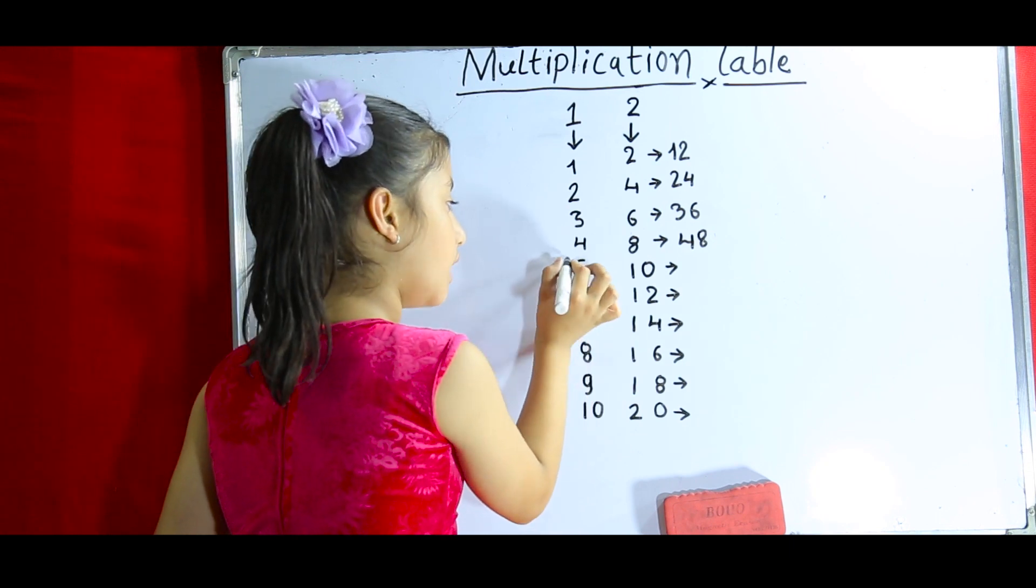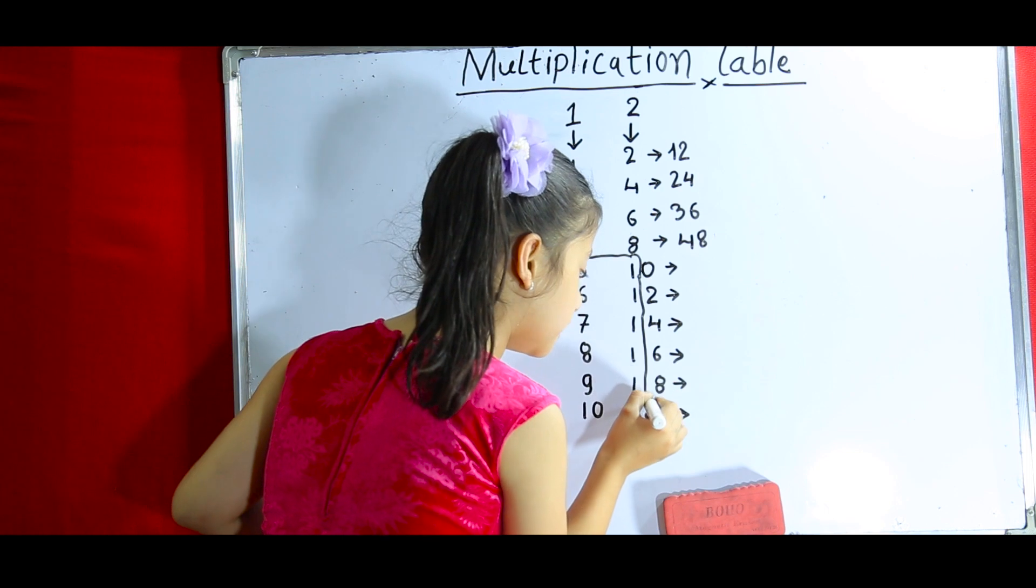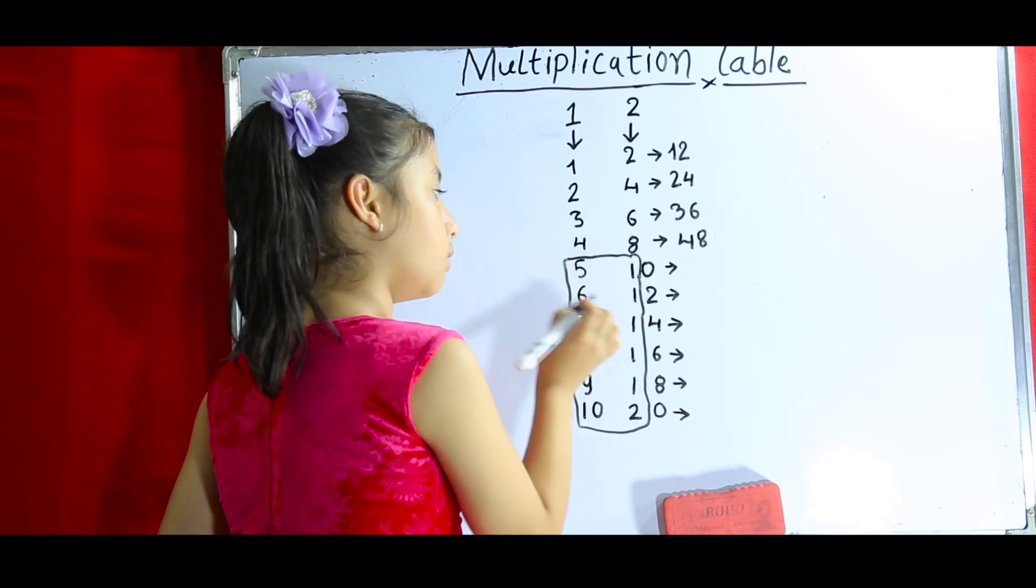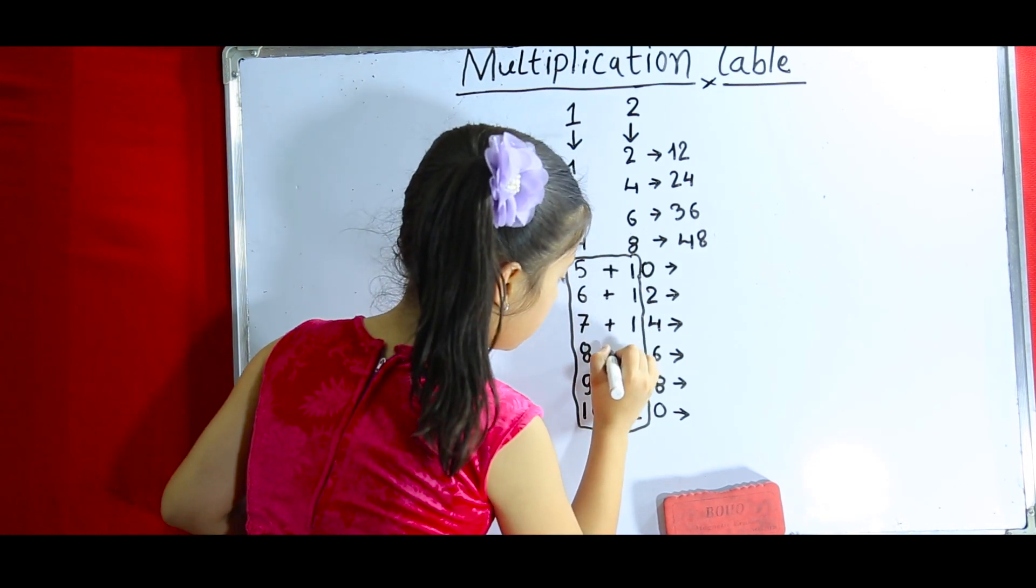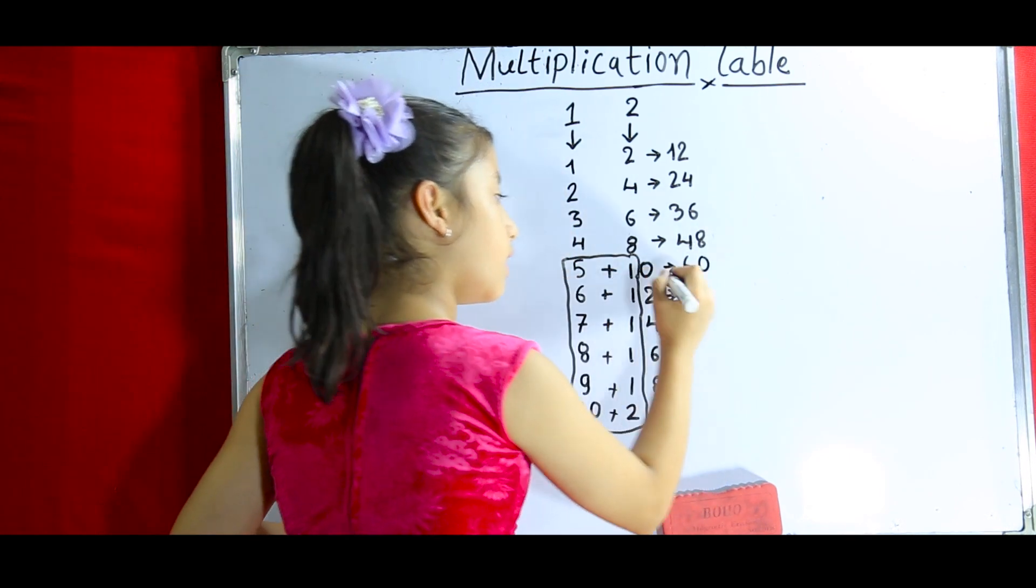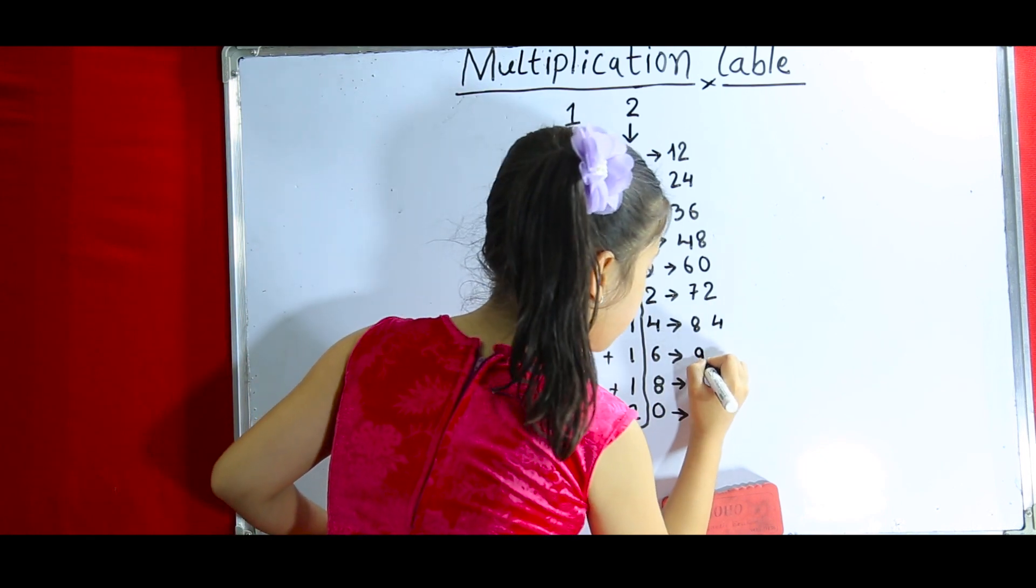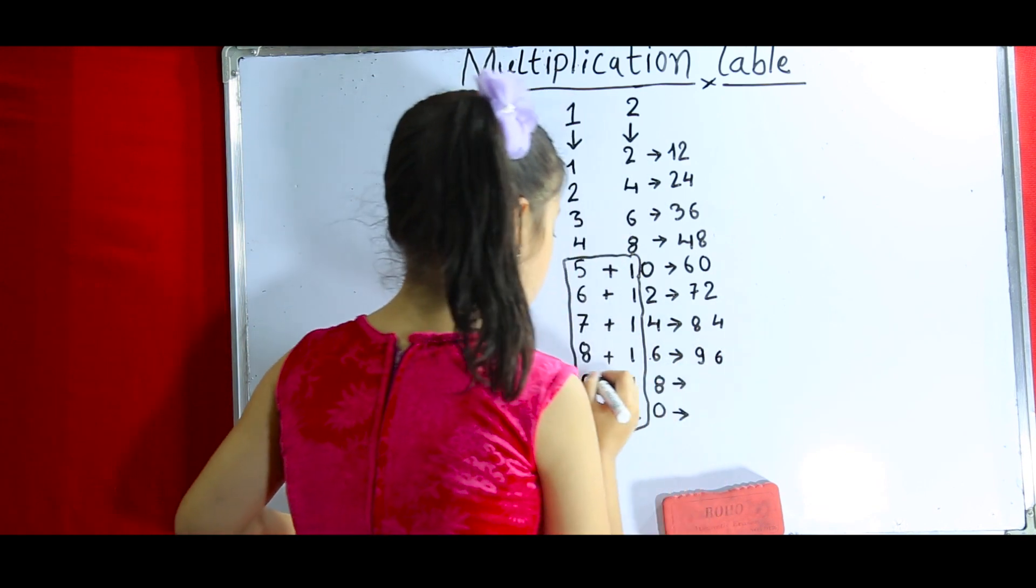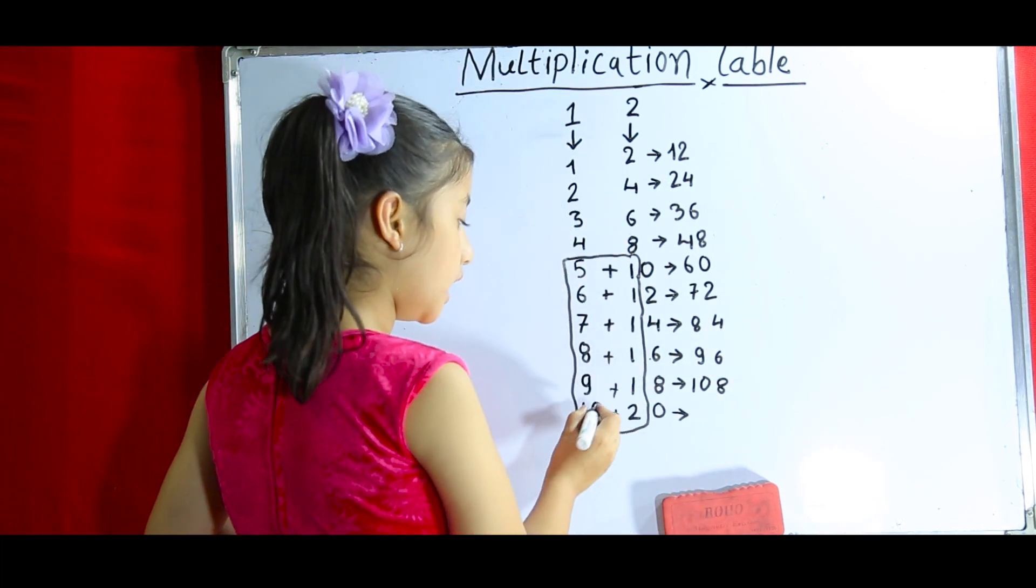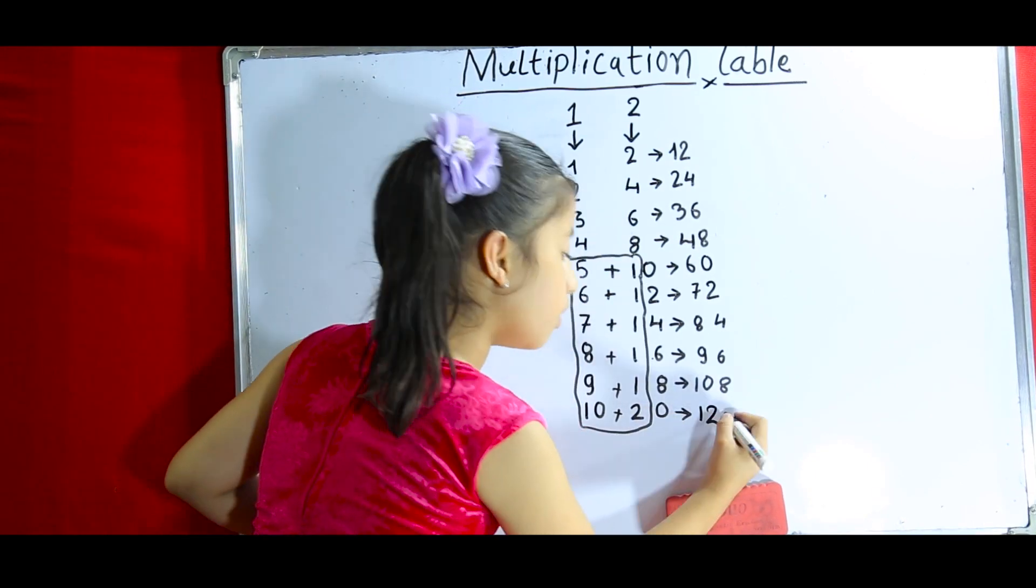But from here you need to add plus 5 from 1 and 5 plus 1, you know it, it's very easy. I've circled it and kept it in a rectangle because it will be easy for you. So let's add 5 plus 1, 60. 6 plus 1, 72. 7 plus 1, 84. 8 plus 1, 96. 9 plus 1, 10, 108. 10 plus 2, so it'll be no need to count, just 0. Think that the 0 is not here, so 1, 2, 12 and 0, complete it.